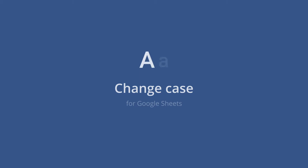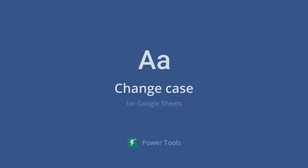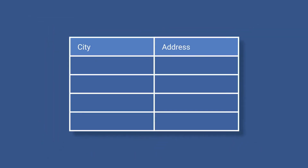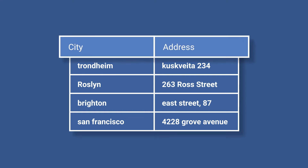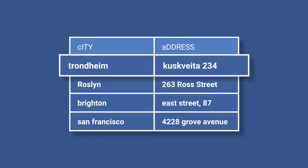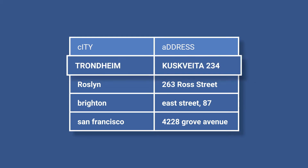Change Case for Google Sheets is a formula-free solution to capitalize and lower letters in spreadsheets in five different ways. Whether your cells contain single words or entire sentences, this tool will quickly change case in your Google Sheets. It will convert all uppercase letters into lowercase and vice versa at the same time, capitalize every single letter so the entire text is uppercase.